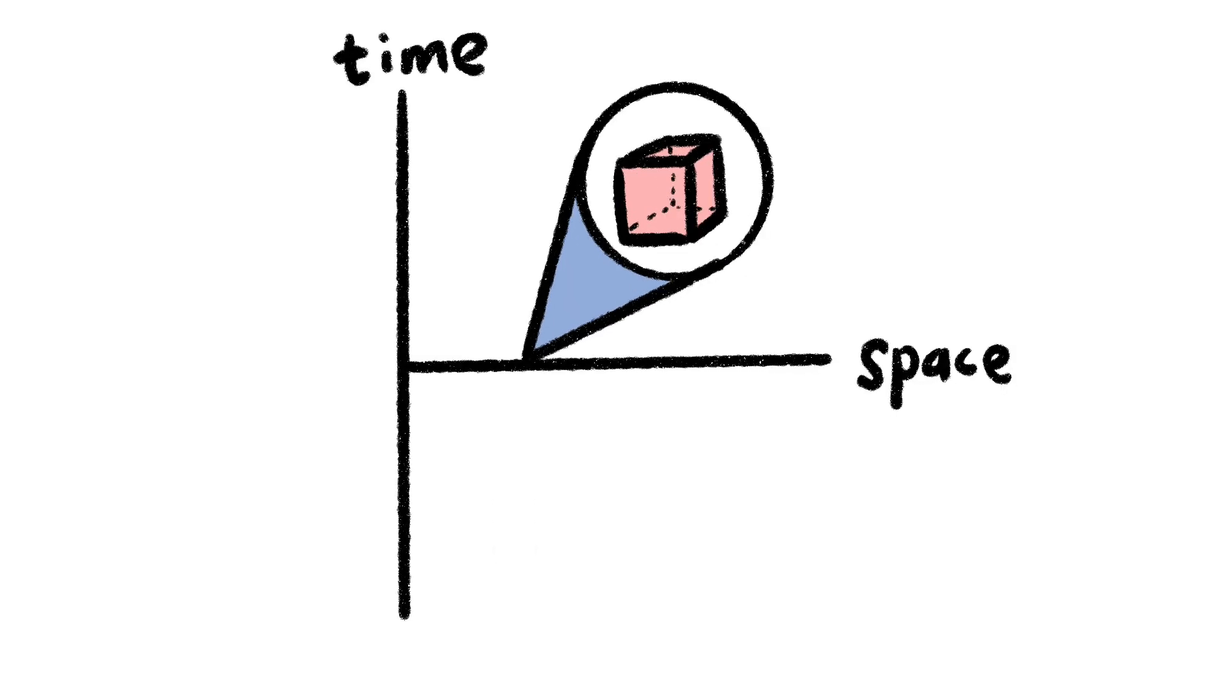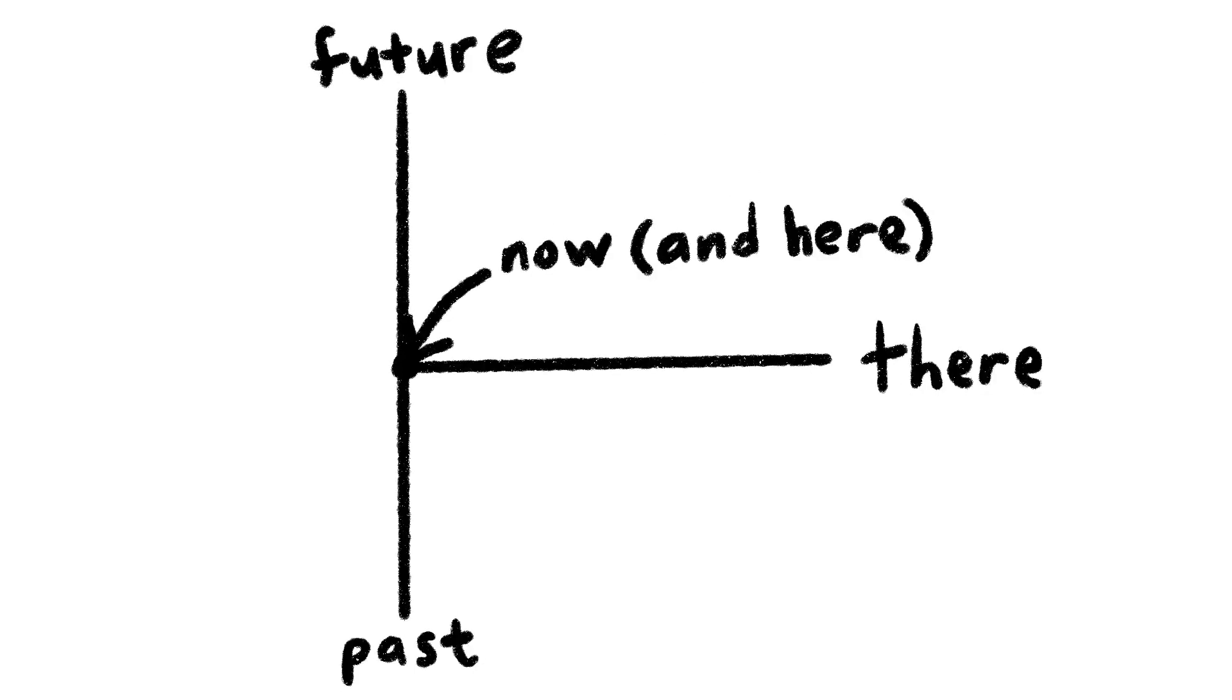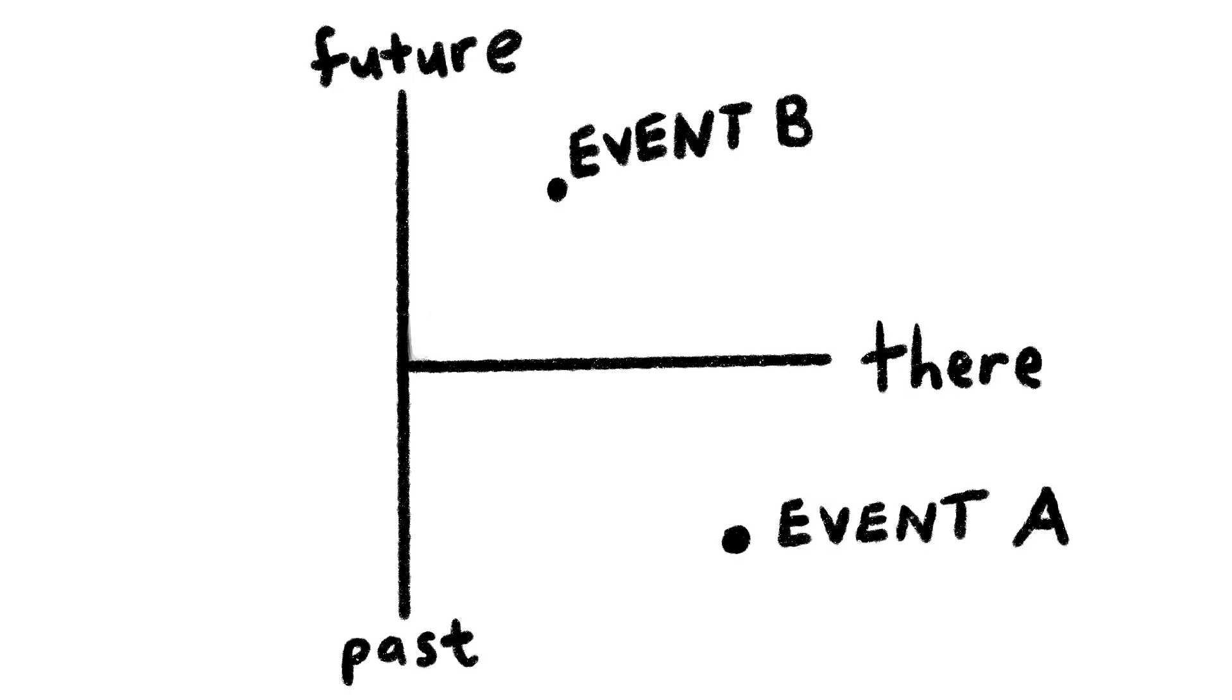This can be graphed like this, where we've collapsed the normal three dimensions of space into one for visualization. But just know that each point on this line actually corresponds to three coordinates. The origin represents our present, both in location and time. All other points are called events.